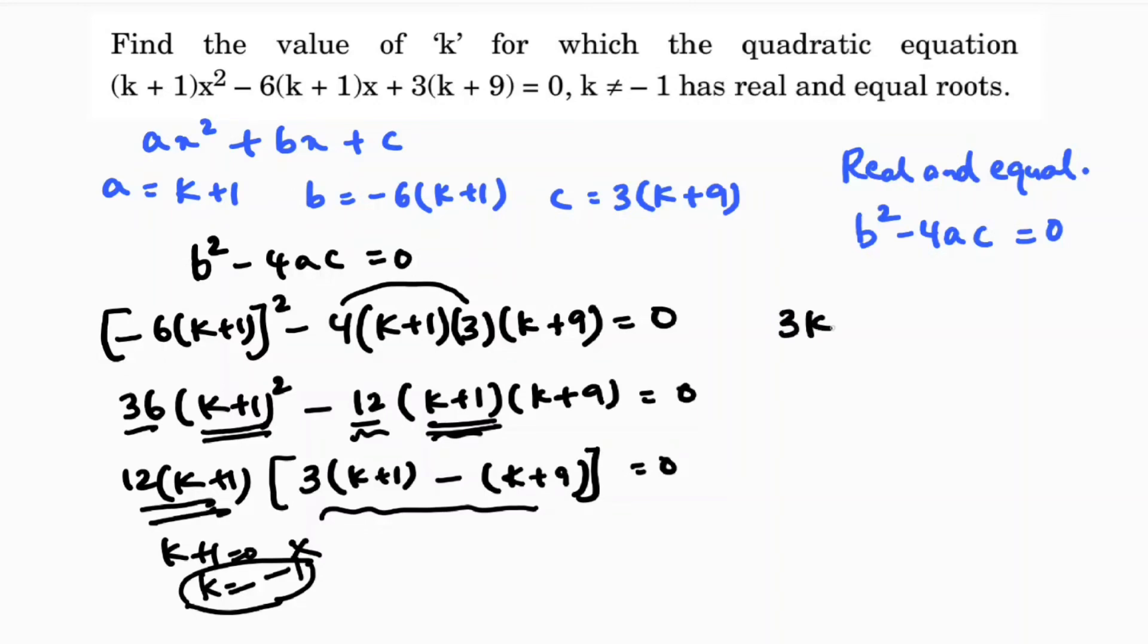Expanding 3(k+1) - (k+9) = 0 gives 3k + 3 - k - 9 = 0, which simplifies to 2k - 6 = 0. Therefore, 2k = 6, so k = 3. Thus, the value of k is 3 for which the given equation has real and equal roots.